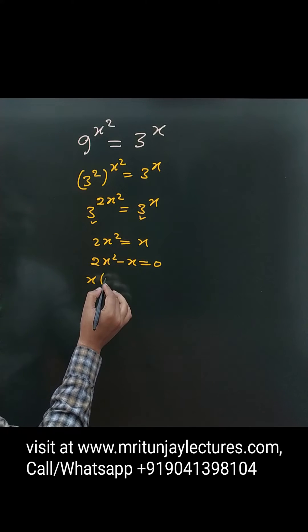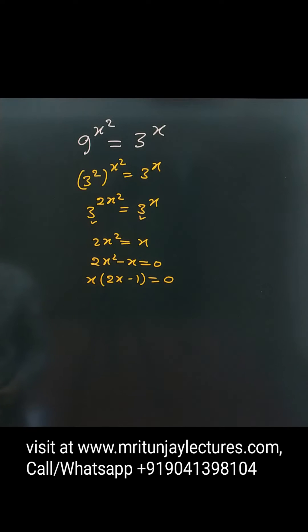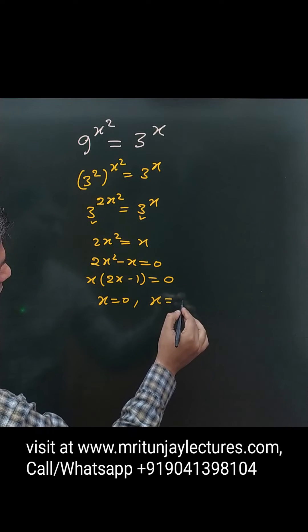So, if we take x as common, then 2x minus 1 will be equal to 0. So, there are two values possible: x equals 0 and x equals 1 by 2.